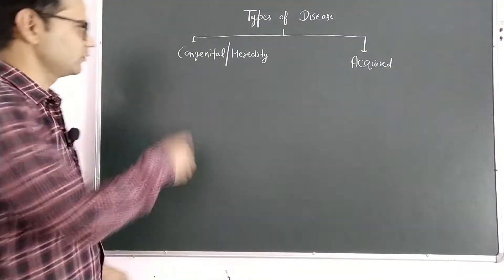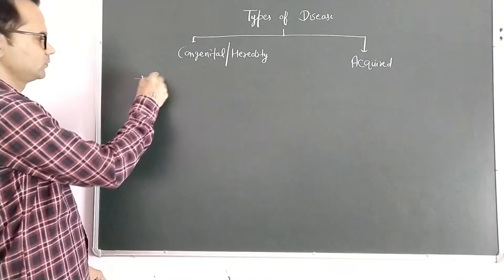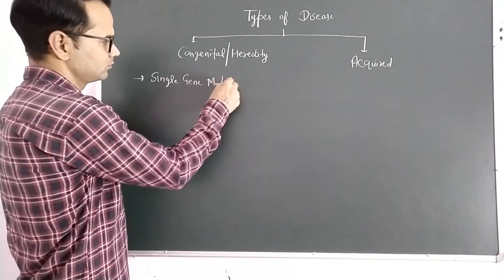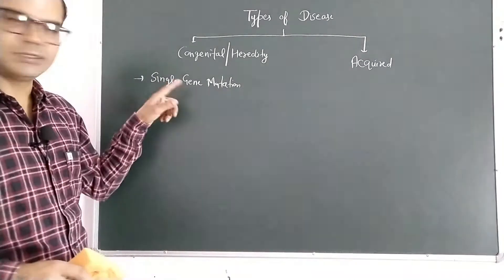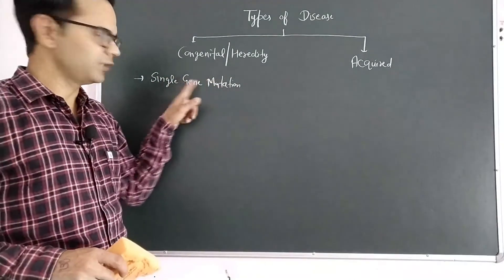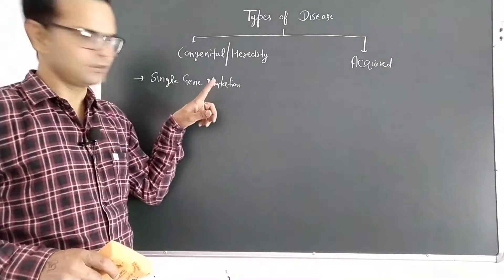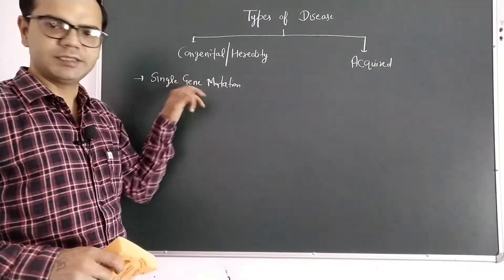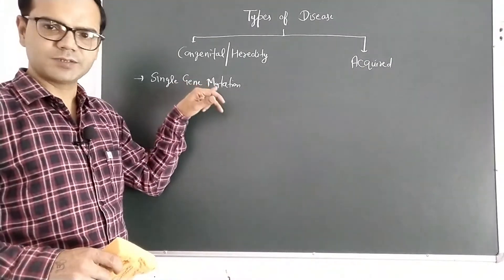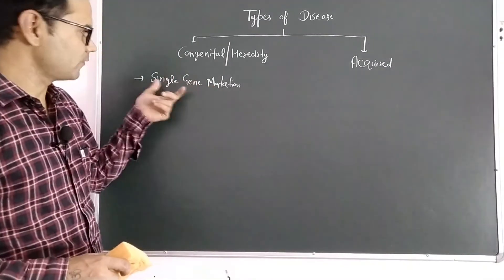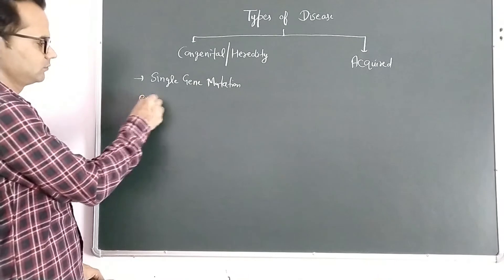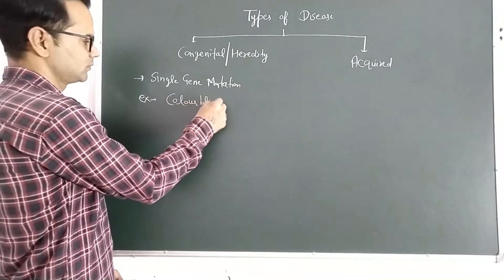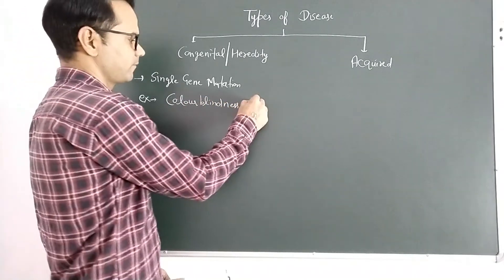Congenital diseases occur due to three factors. Factor number one is single gene mutation — one mutant gene is responsible for one disorder. Mutation means a sudden change in the structure or coding of a gene, specifically a change in the nitrogenous base sequence of a gene.